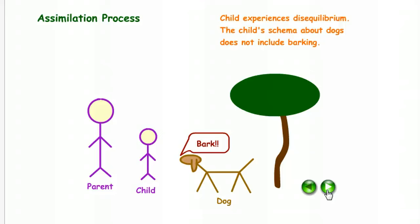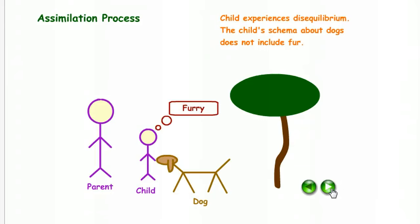Then the animal barks. The child experiences disequilibrium. The child's schema about dogs does not include barking. Then, in petting the animal, the child notes that it's furry. The assimilation process is continuing. The child experiences disequilibrium. The child's schema about dogs does not include fur.